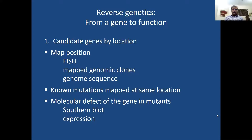In reverse genetics, we have a candidate gene in mind — an idea about a single gene or a set of genes which we want to analyze. We call this approach 'from gene to function.' In contrast, in forward genetics we go from having no idea about genes — we are just interested in a certain biological question.